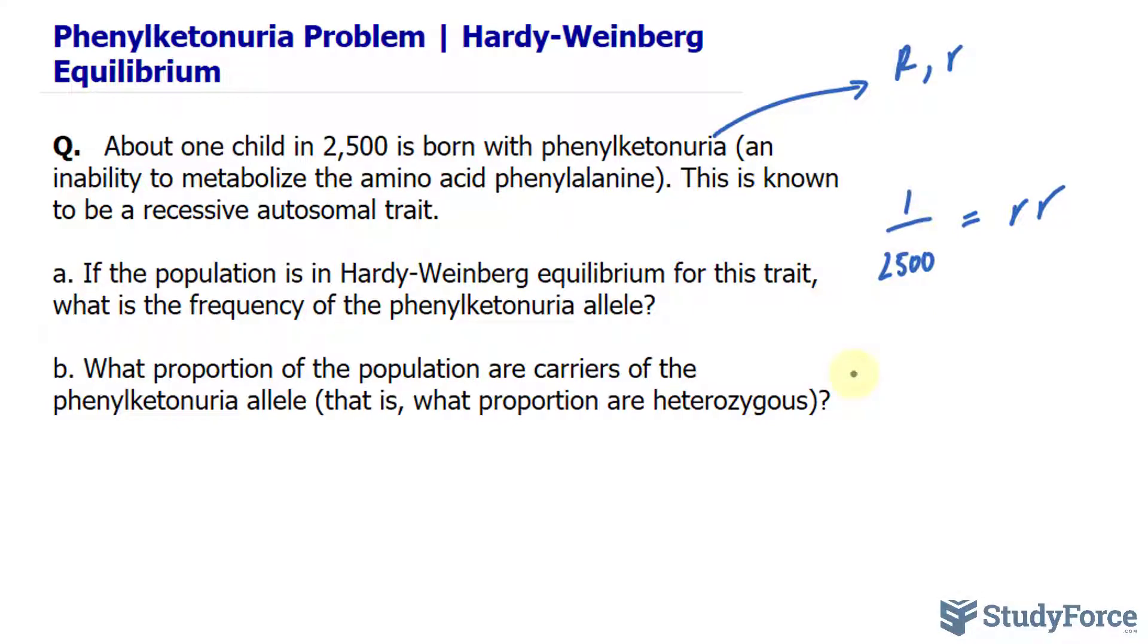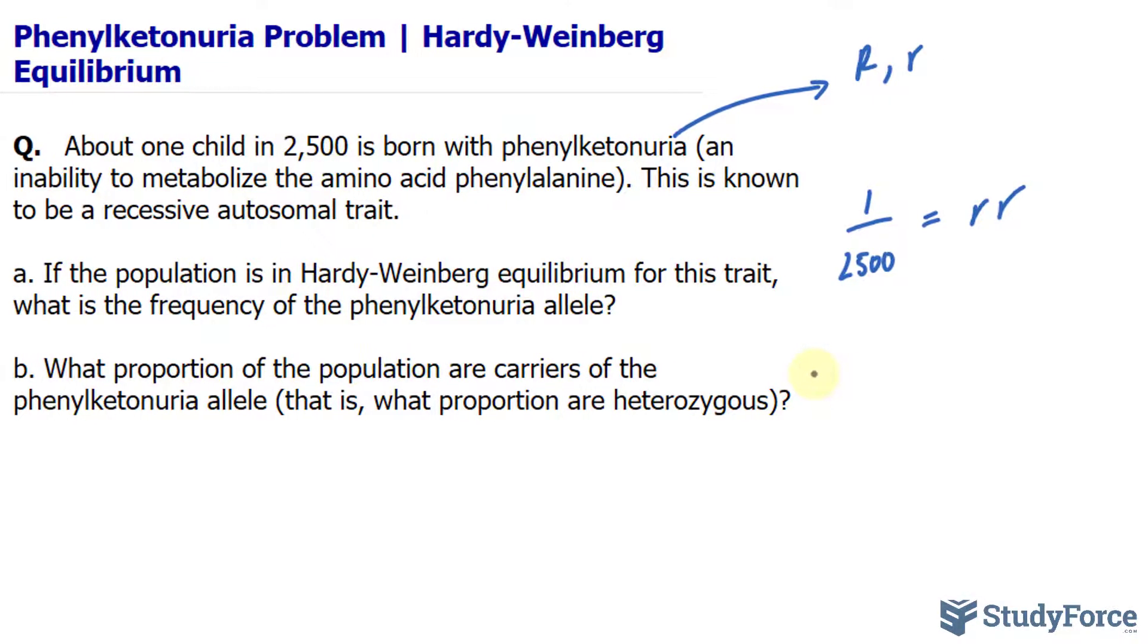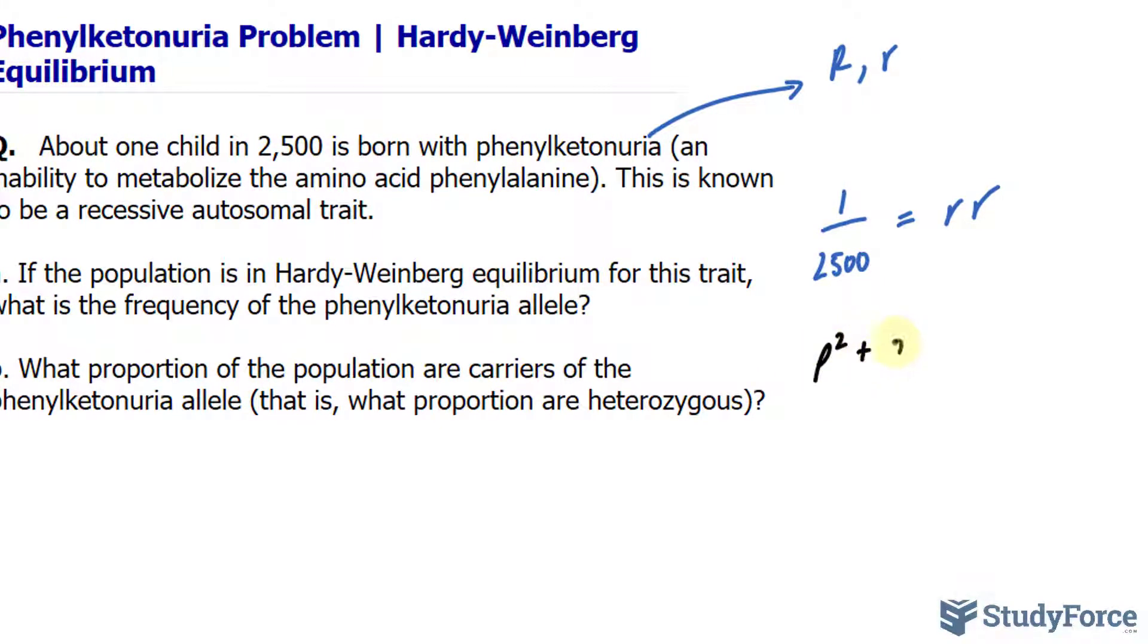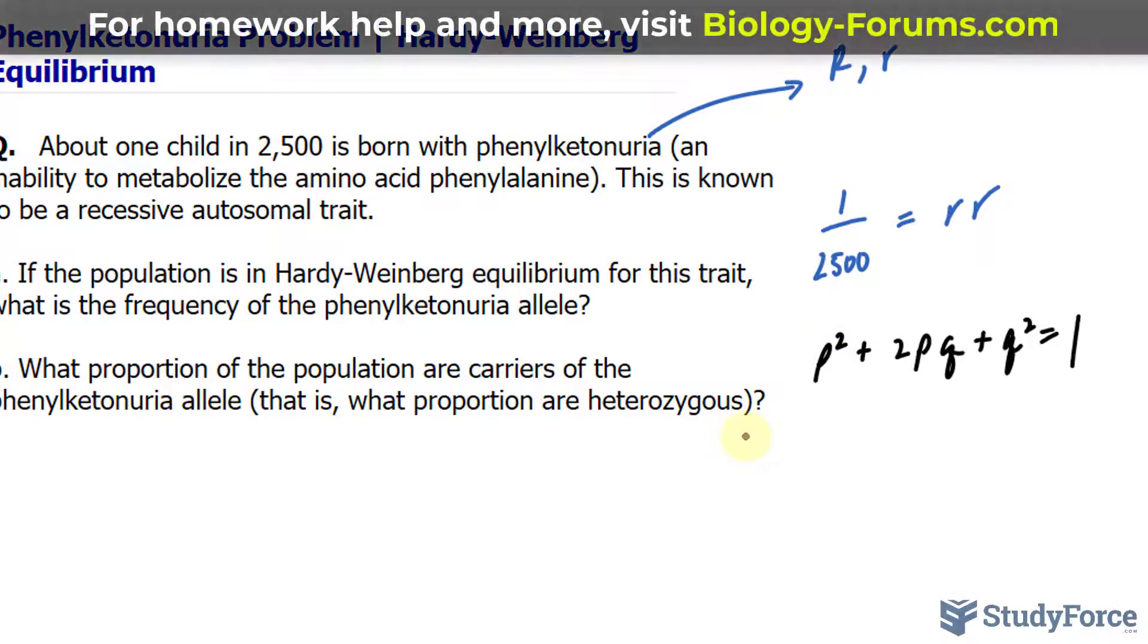The way we will go about doing this is by using the Hardy-Weinberg formula, which looks like this: p squared plus 2pq plus q squared is equal to 1. p represents dominant, whereas q represents recessive.